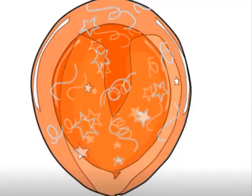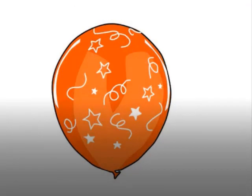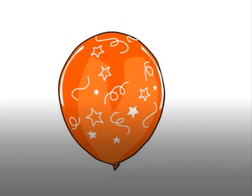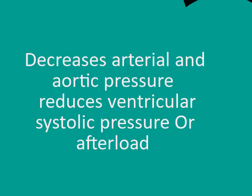Take the example of an inflated balloon knotted with a rubber band — to get the air out, the balloon must work against that rubber band knot. Afterload can be reduced by dilation of arteries, which decreases arterial and aortic pressure, thereby reducing ventricular systolic pressure or afterload and impedance to ventricular ejection of blood.